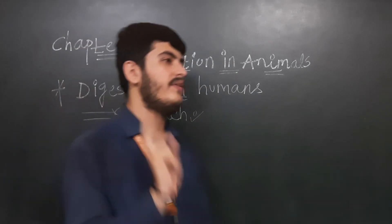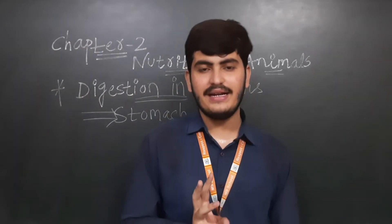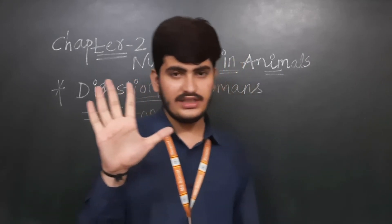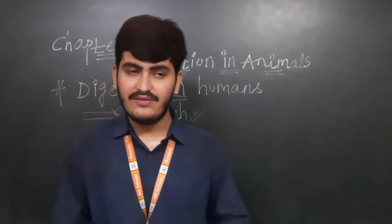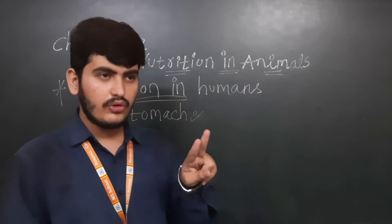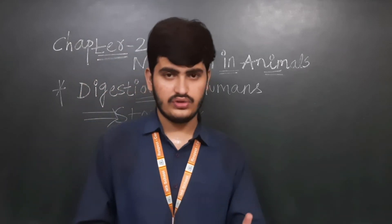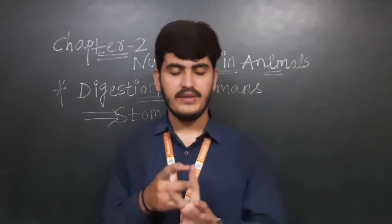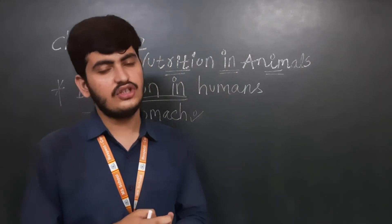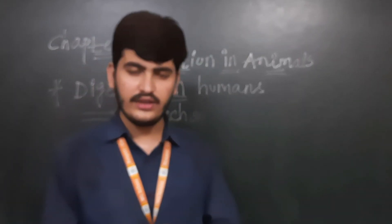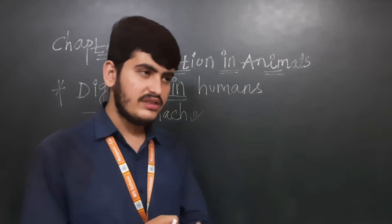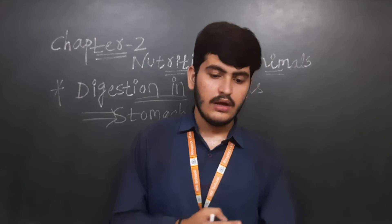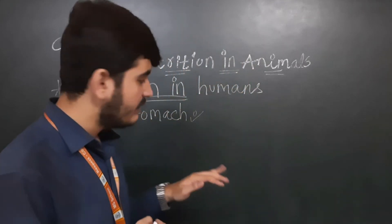So to summarize the stomach: it is a thick-walled bag, flattened J-shape, the widest part of the alimentary canal. It receives food from the esophagus and gives it to the small intestine. Mucus protects the lining of the stomach, hydrochloric acid kills germs and bacteria entering with the food, and digestive juices help break down complex substances into simpler ones.